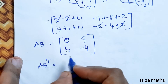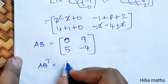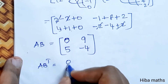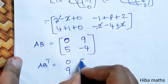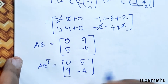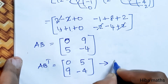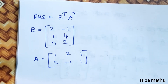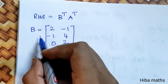For (AB)ᵀ we write: 1st row becomes 1st column, 2nd row becomes 2nd column. This gives us the first result and the second result. Now for the RHS: BᵀAᵀ. We compute Bᵀ and Aᵀ separately.